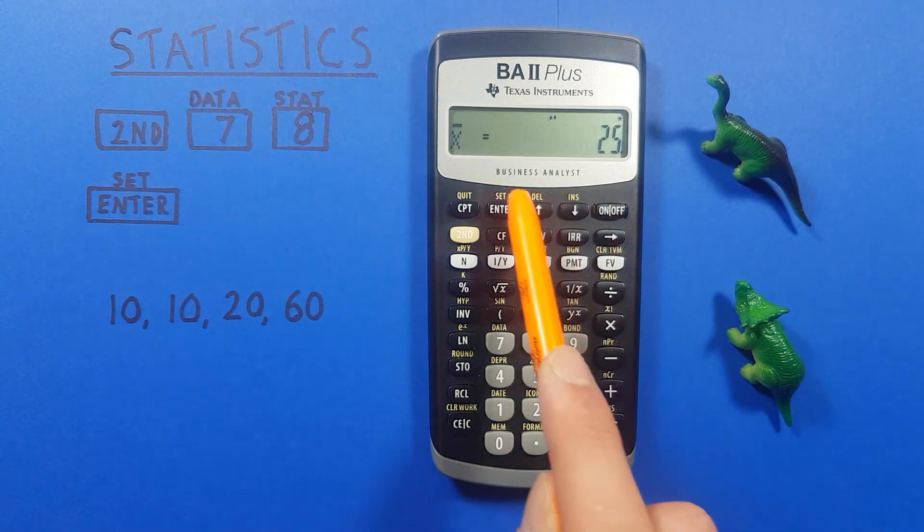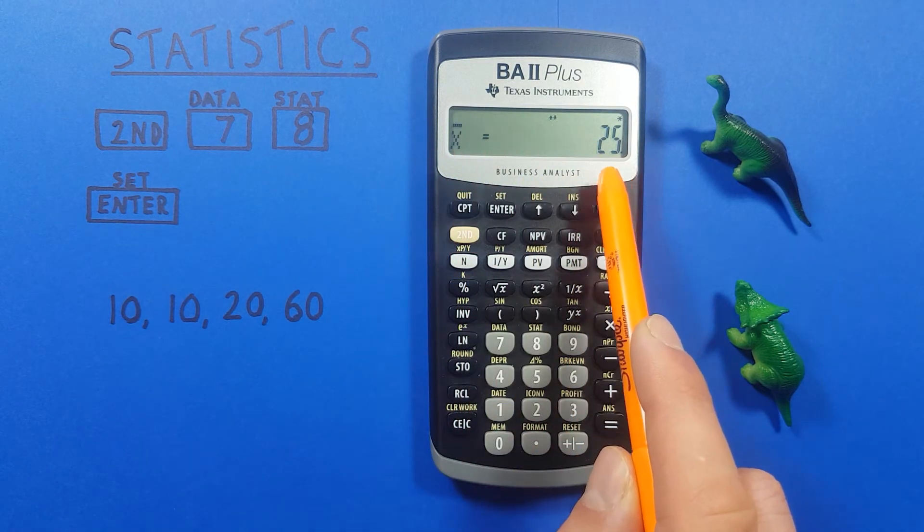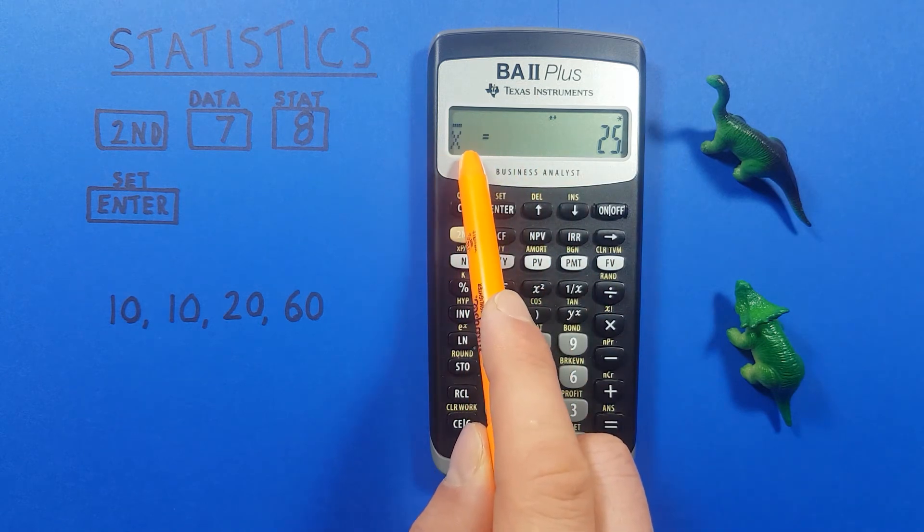If we press down again we get x bar is equal to 25. This is the mean of our data set is equal to 25.